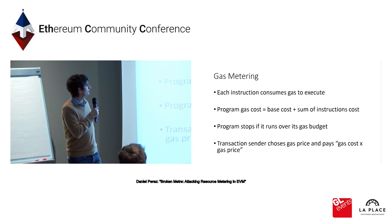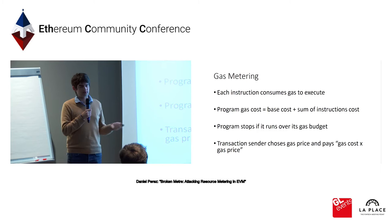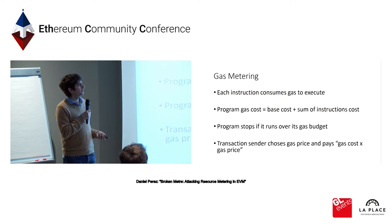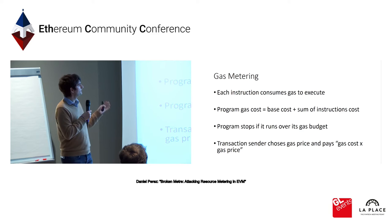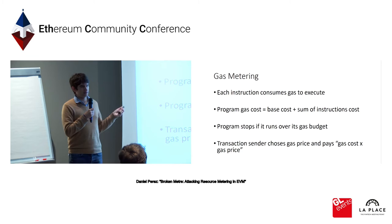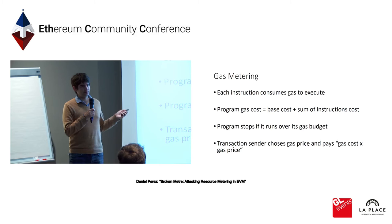One of the particularities compared to most programming models is that we can't allow people to run programs forever. We need to control what people can or cannot run; otherwise people could just stop the network by doing an infinite loop. For Ethereum, they use metering — the concept of gas — which is a unit associated with each instruction. There is a budget for the program, and when the program exceeds its gas budget, there is an exception and the program stops.